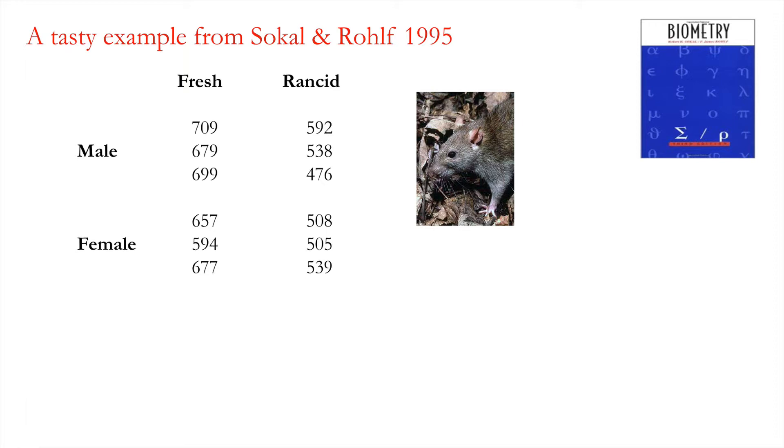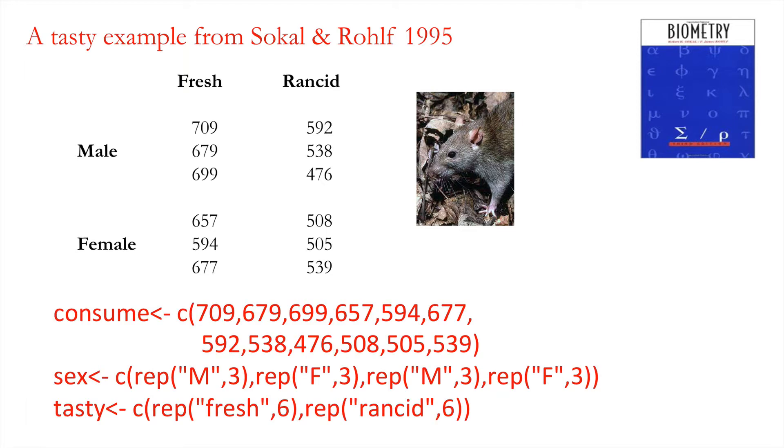So let's first enter our data such that we can use it in R. And because it's a simple list of data then I'm simply going to write it out. We've got our consumption data here for 709 all the way down to 539. We've got our sex. We've got three males here. We've got three females here, three males and three females and so on.